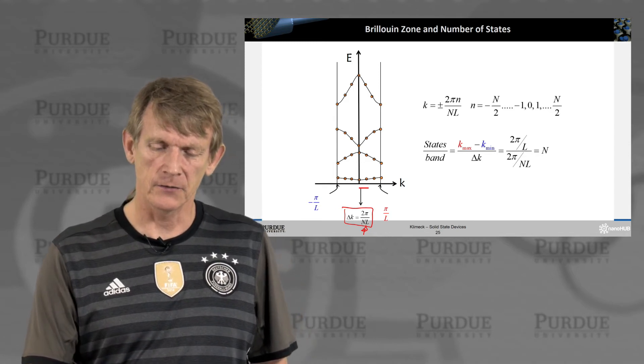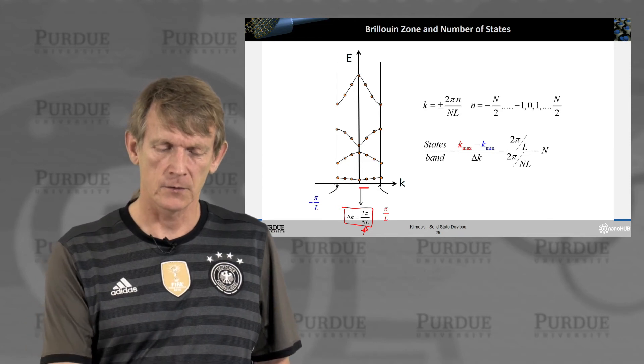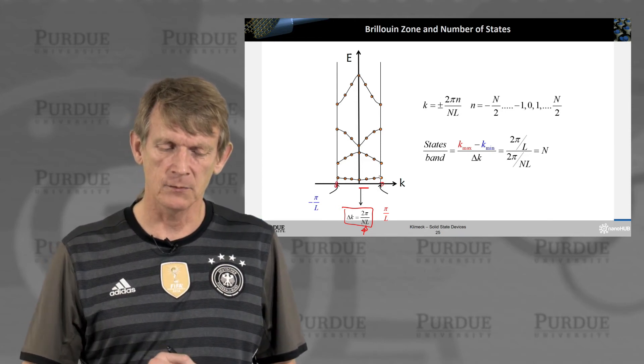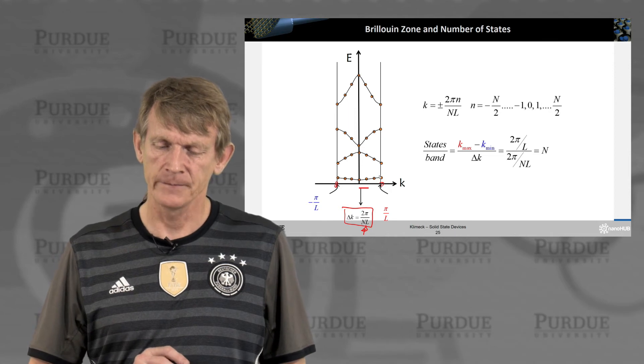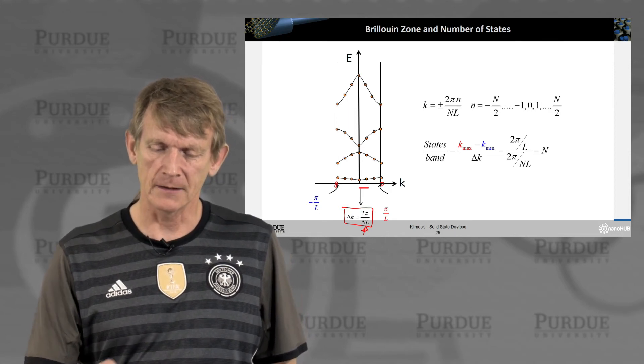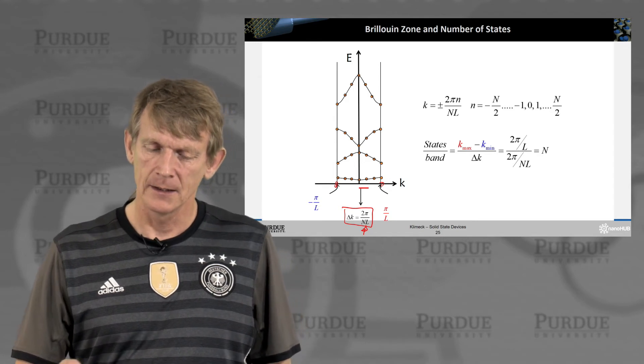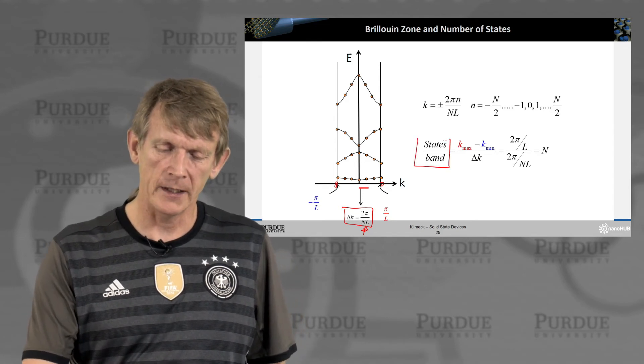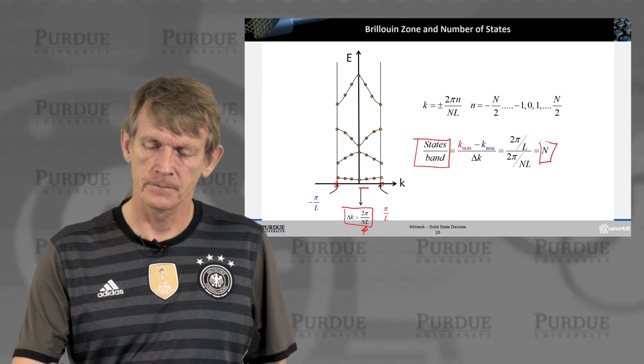So the interesting aspect here is that the number of states per band is the difference between k-max and k-min. So from here to here. And that's minus pi over L and pi over L. So in total it's 2 pi over L over the delta K, which is 2 pi over NL. So the number of states per band is N.